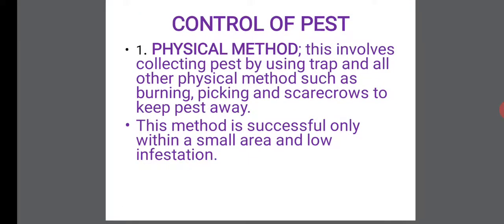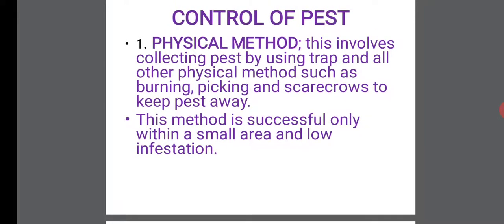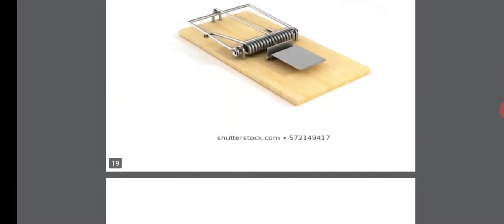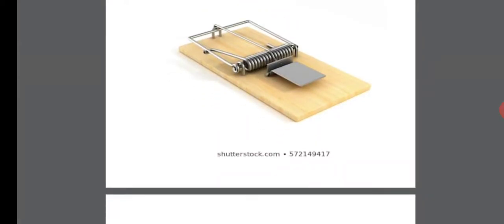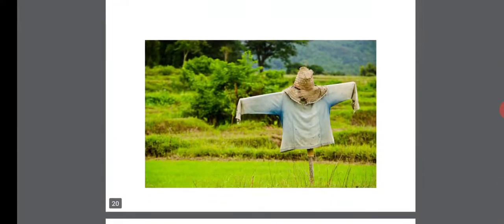Control of pests. Pests need to be controlled to prevent our crops from damage and to reduce pest populations. Number one: physical methods. This involves collecting pests by using traps and other physical methods such as burning, picking, and scarecrows to keep pests away. You can use a mouse trap to catch mice. Scarecrows are used to scare birds away from crops such as maize, because birds love feeding on grains.